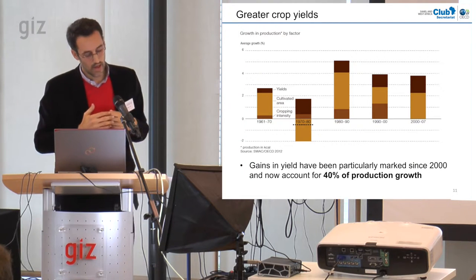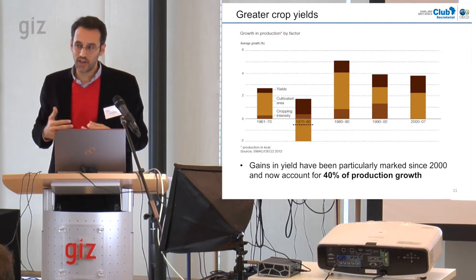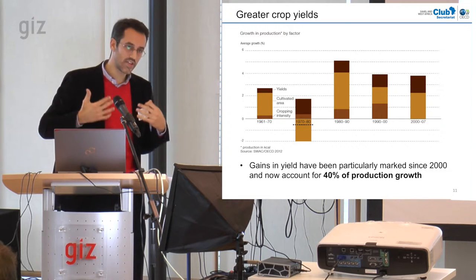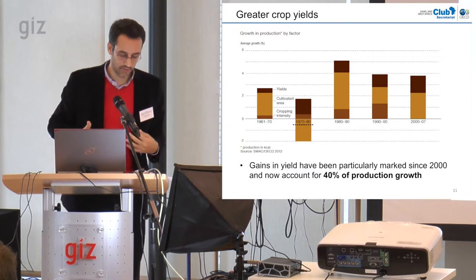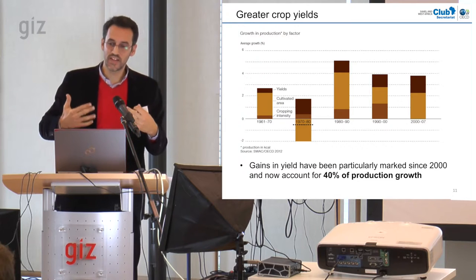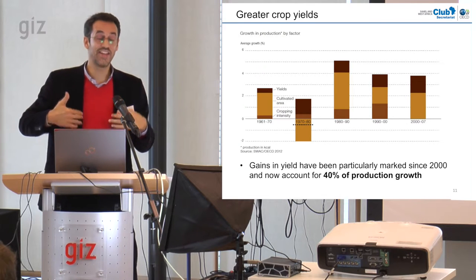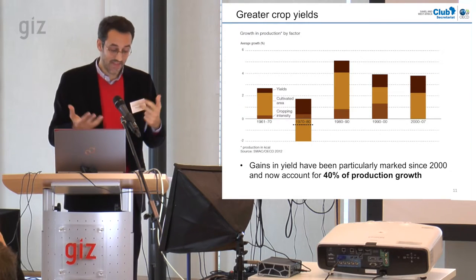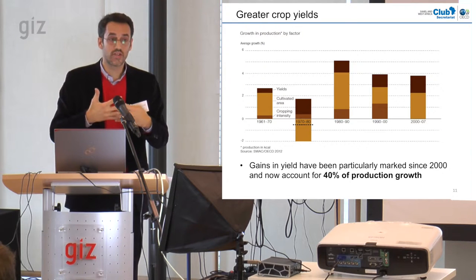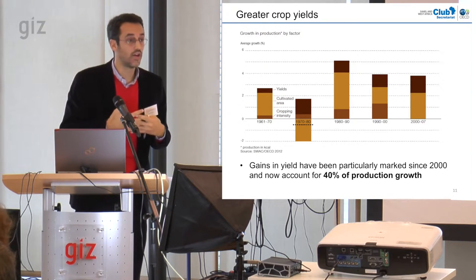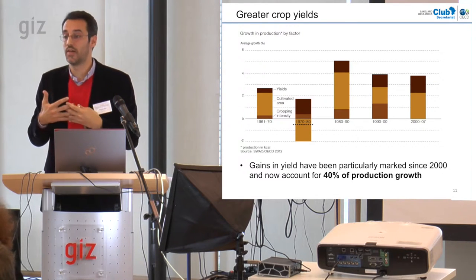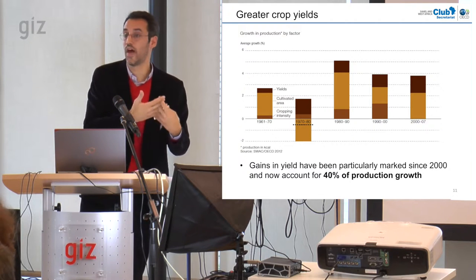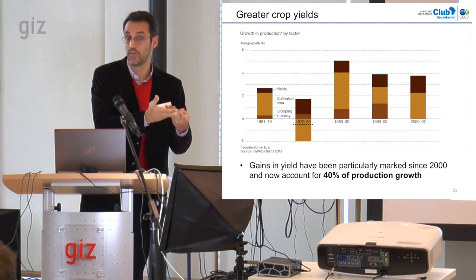What this simple graph shows is that agricultural intensification is underway — West Africa's agriculture is intensifying. And that is closely linked to these settlement dynamics and the emergence of the market.